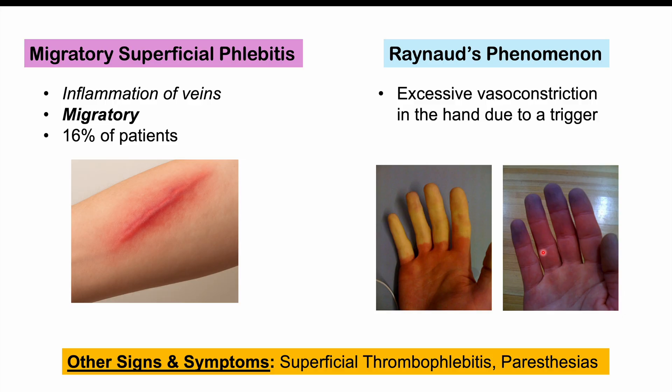Some other signs and symptoms include superficial thrombophlebitis, which is non-migratory and occurs in roughly 50% of patients. We can also see paresthesias — numbness and tingling sensations — generally where there is a clot or occluded blood vessels. So wherever there is ischemia, we can also have paresthesias.